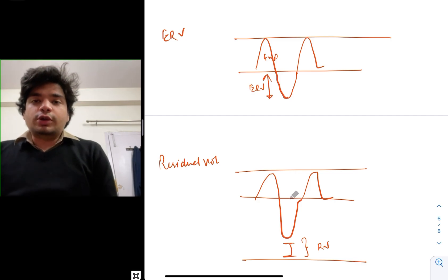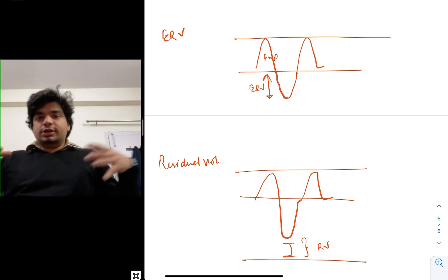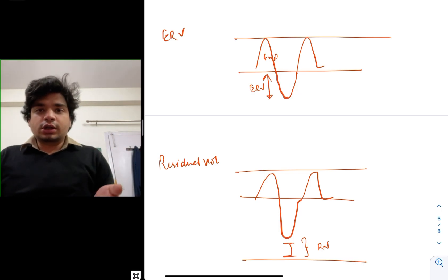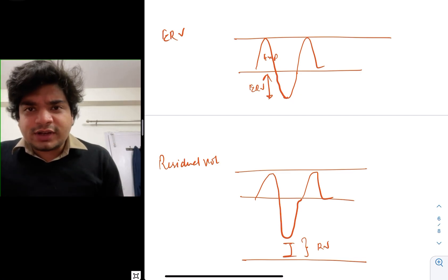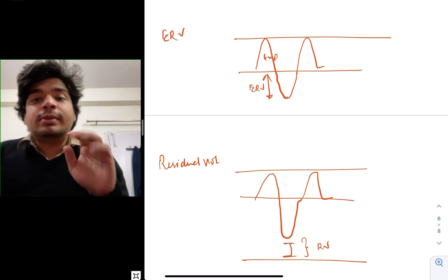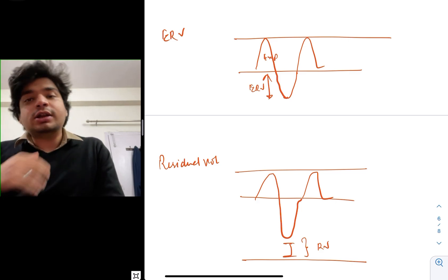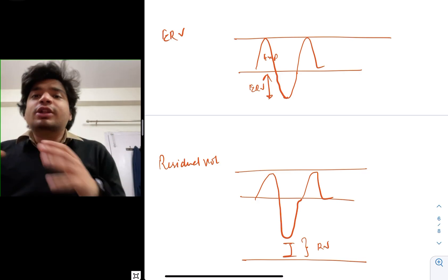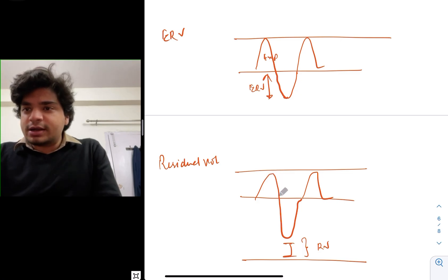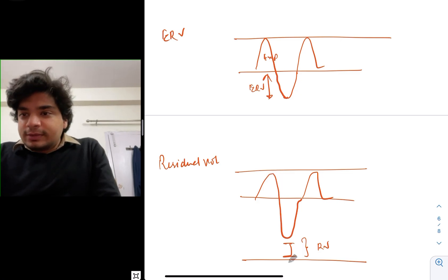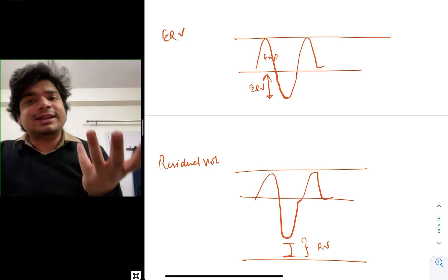Now let's understand the concept of residual volume. Lungs are filled with air. When I do the tidal volume there is air, when I expire the tidal volume goes out, and even if I expire more — is there no air left in the lung? No. There is still some amount of air remaining in the lung despite any expiratory effort. This amount of air that will always be left in the lung irrespective of any effort is called the residual volume. Residual obviously means the thing that is remaining.